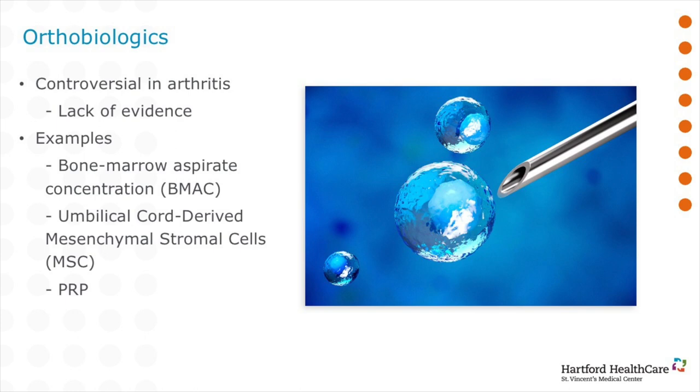Stem cells and platelet-rich plasma fall into a broader category of therapies called orthobiologics, which are substances naturally found in the human body and can be used to improve healing of cartilage, injured muscles, tendons, ligaments, and even fractures. The role in the treatment of osteoarthritis is controversial mainly due to the lack of evidence. Some examples of orthobiologics include bone marrow aspirate concentrate, umbilical cord-derived mesenchymal stem cells, and platelet-rich plasma.